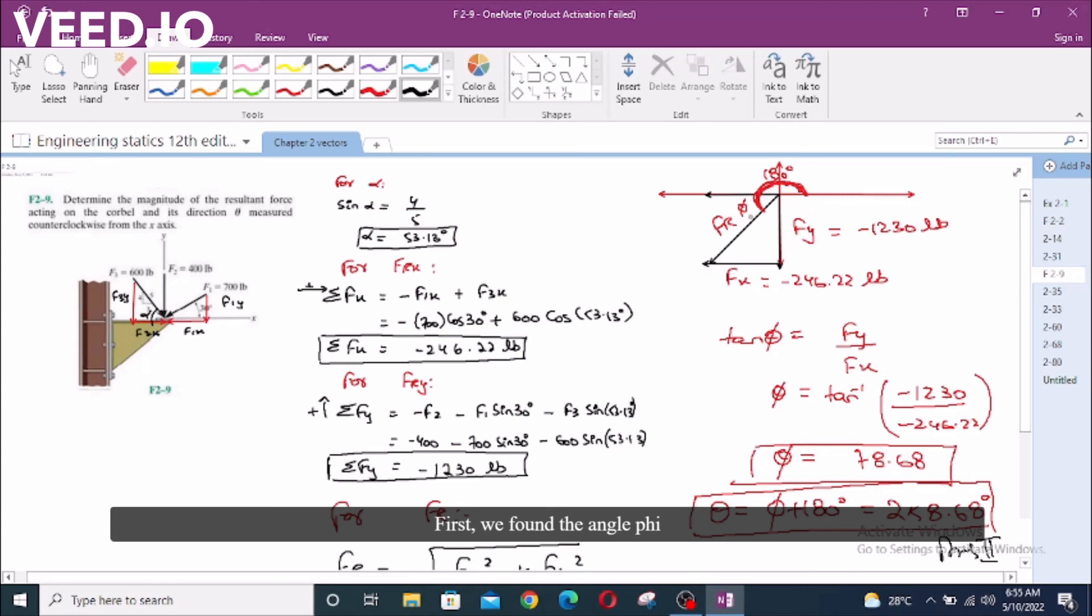First, we found the angle phi which is 78.68 degrees. And then measuring counterclockwise from the x-axis, we have to add 180 degrees. So we have theta measured from positive x-axis and going all the way counterclockwise to the FR. So we have 258.68 degrees.